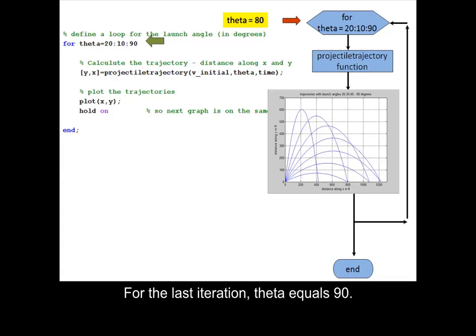For the last iteration, theta equals 90. Call the function projectile trajectory.